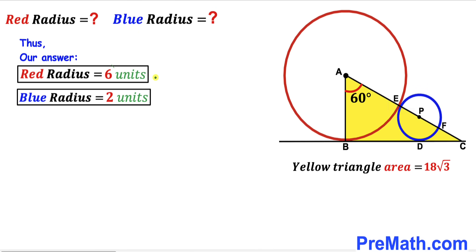So after all the calculations, the radius of the red circle turns out to be 6 units, whereas the radius of the small blue circle turns out to be 2 units. That's our final answer. Thanks for watching, and please don't forget to subscribe to the channel for more exciting videos.